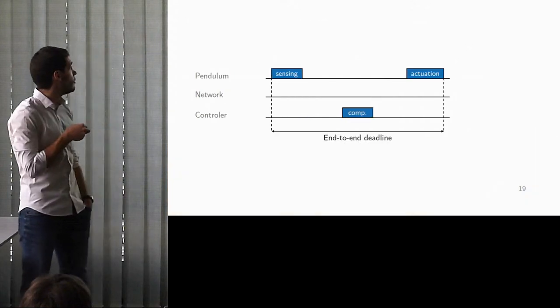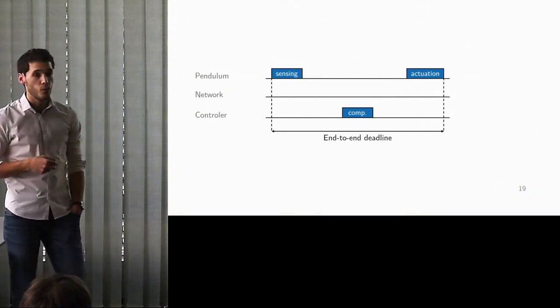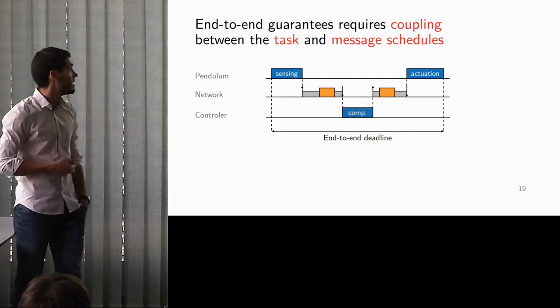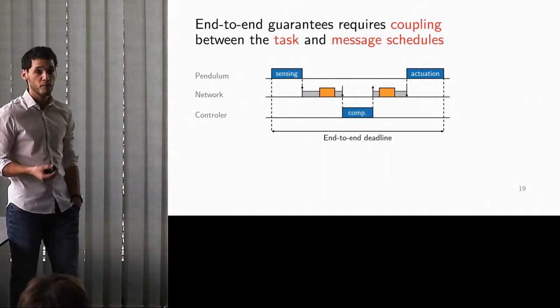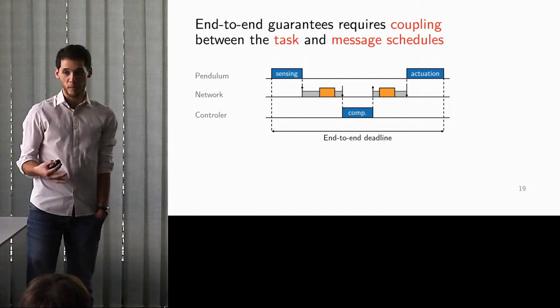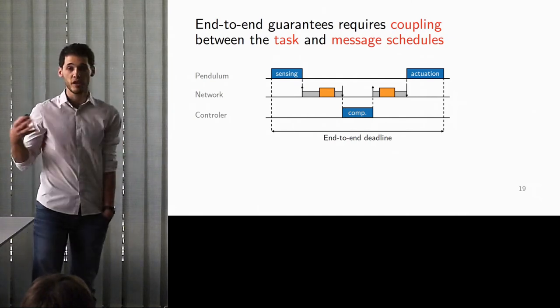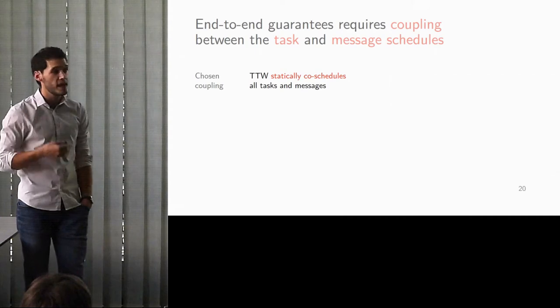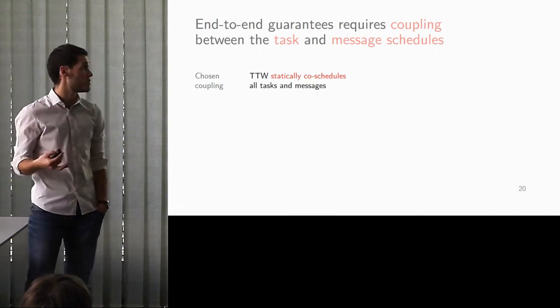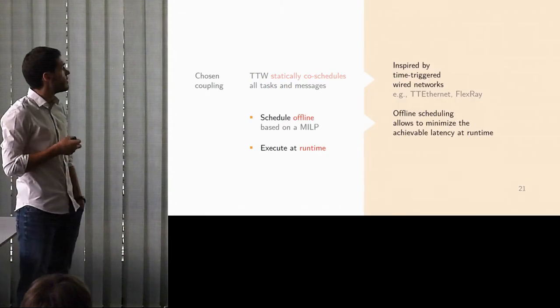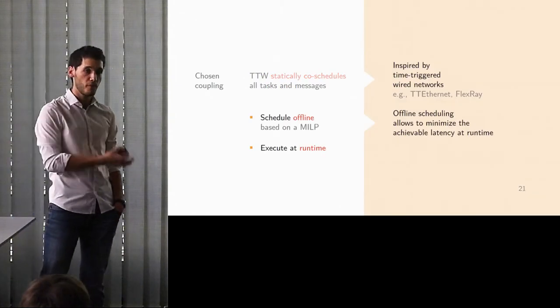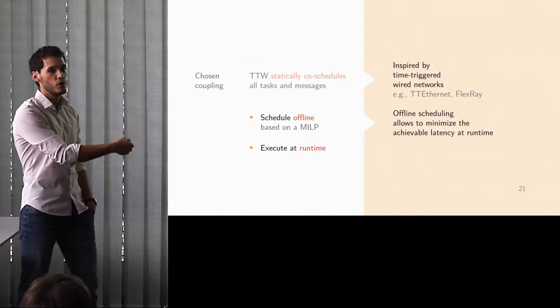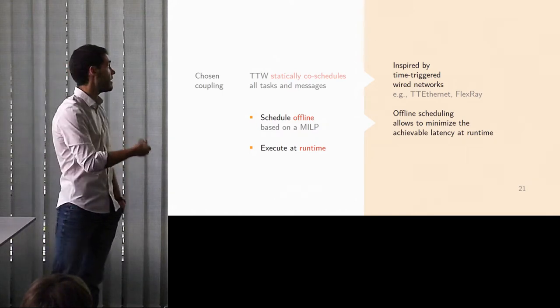If we go back to our pendulum example, it is only once we know when the task is going to be executed, that we're going to be able to obtain our message deadlines, and then schedule our network. The bottom line being that we need to have some sort of coupling between the scheduling of the task and the scheduling of the messages. This can be done in various ways, and in TTW, we do this by statically co-scheduling all tasks and messages. Essentially, the idea is that we're going to synthesize all the schedules offline by solving a linear program, and then we're going to execute those tables, those schedules, at runtime. Over and over again, the same ones.